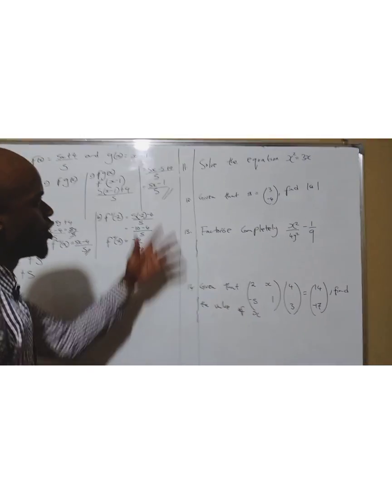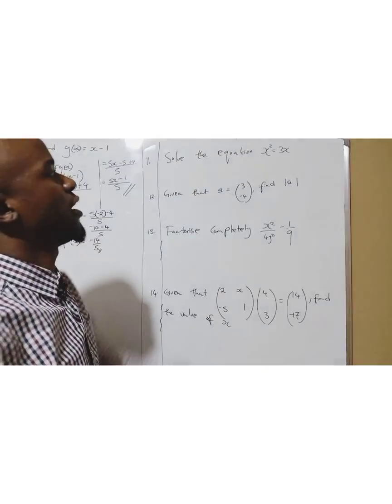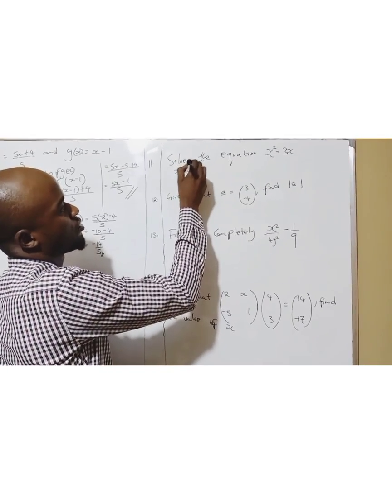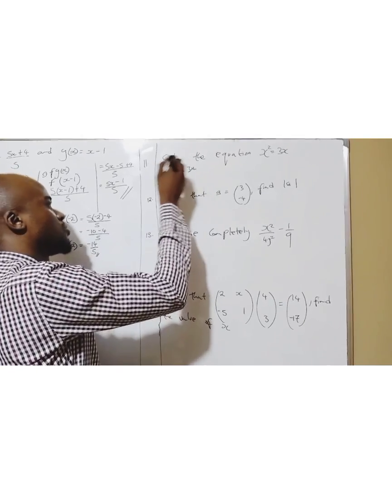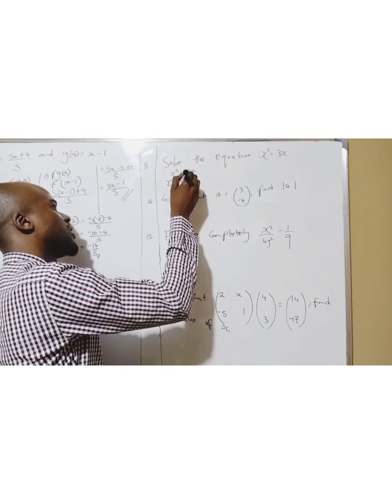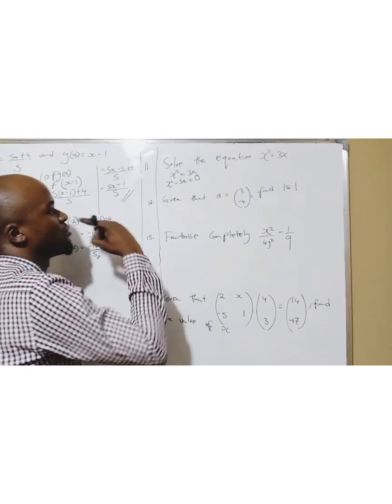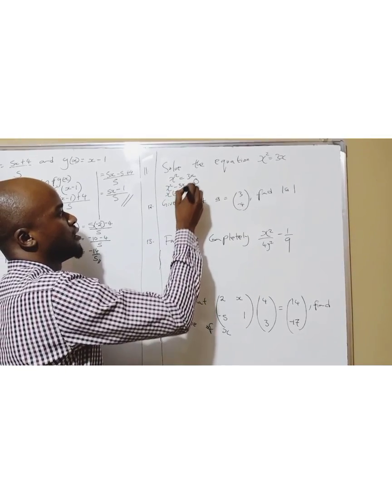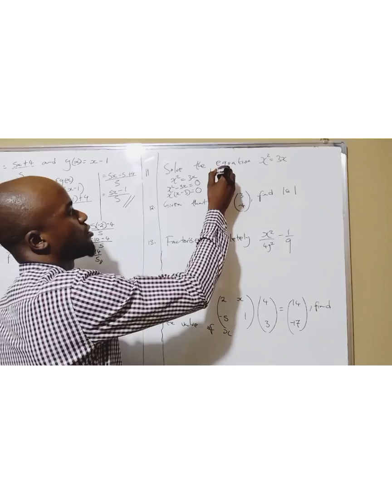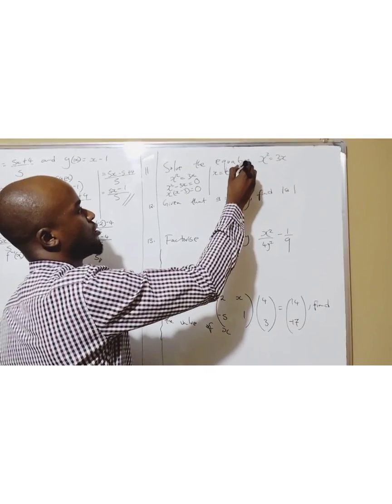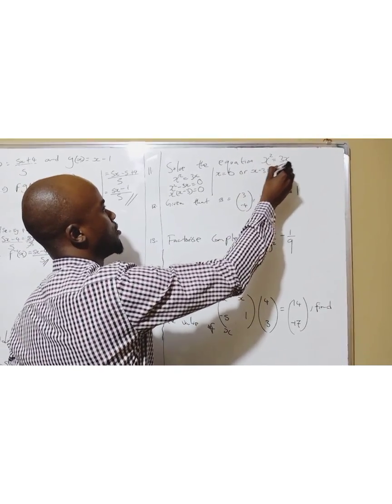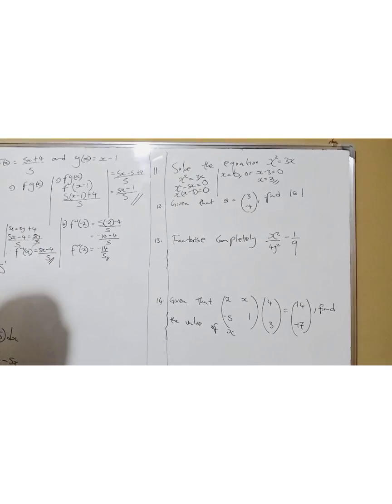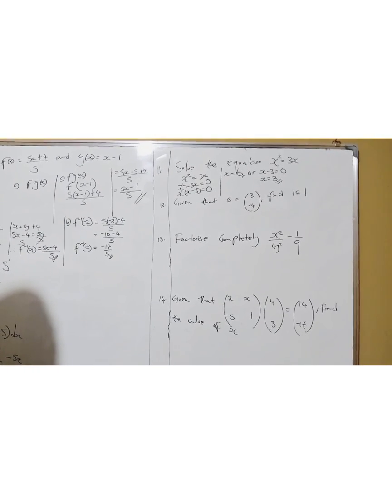Question eleven: solve the equation x squared equals 3x. This 3x goes this side: x squared minus 3x equals zero. I factorize: x(x - 3) equals zero. So x equals zero, or x minus 3 equals zero, so x equals 3. These are your two answers: x equals zero and x equals three.